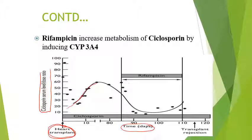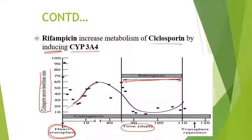Then after 70 days, rifampicin is also started for the same patient. Rifampicin will induce — meaning increase — the level of CYP3A4 enzymes in the body, which causes early metabolism of cyclosporine. Because of rifampicin, the level of cyclosporine in the body decreases, as shown by this line. Because the level of cyclosporine is decreased, the person's natural immunity will increase, and hence it will cause transplant rejection.